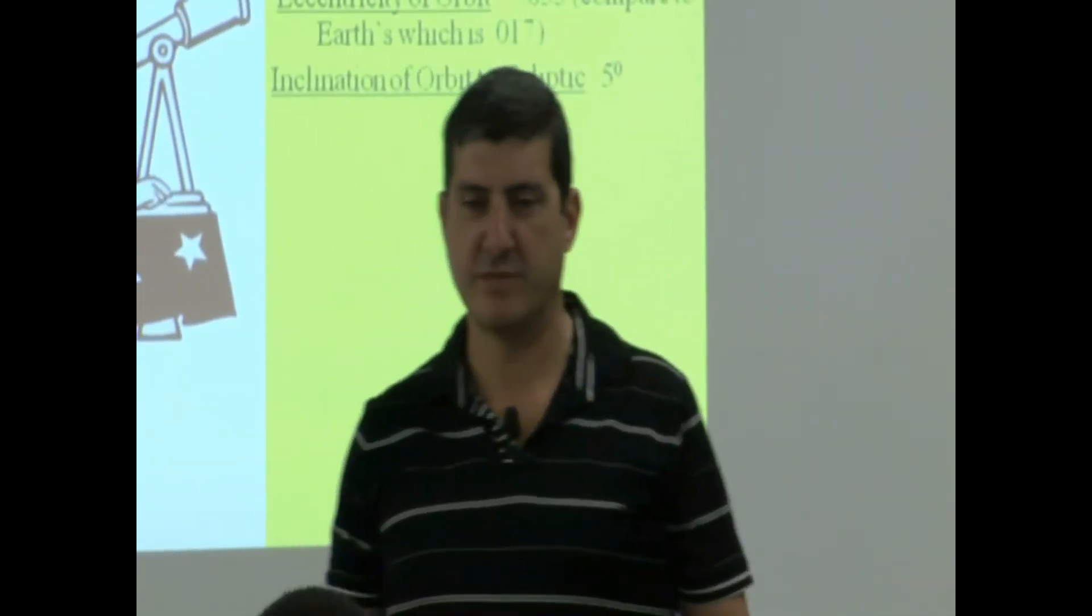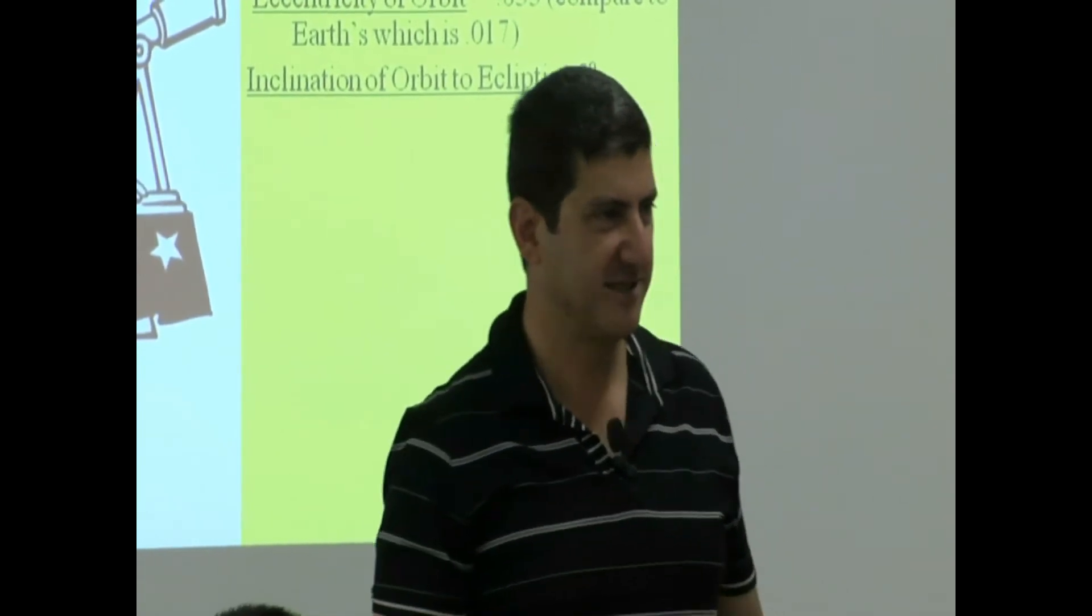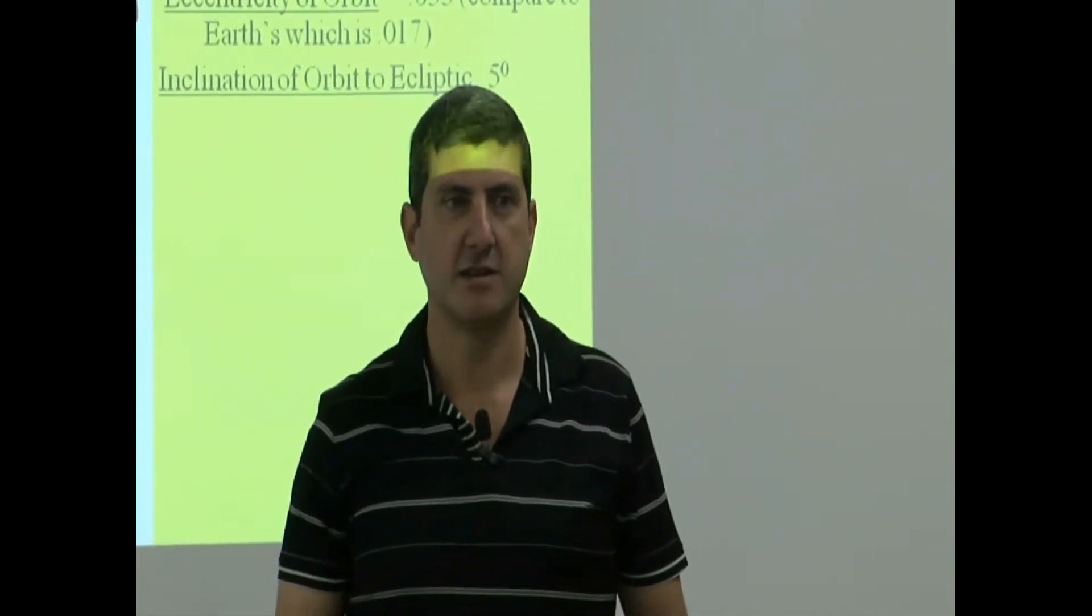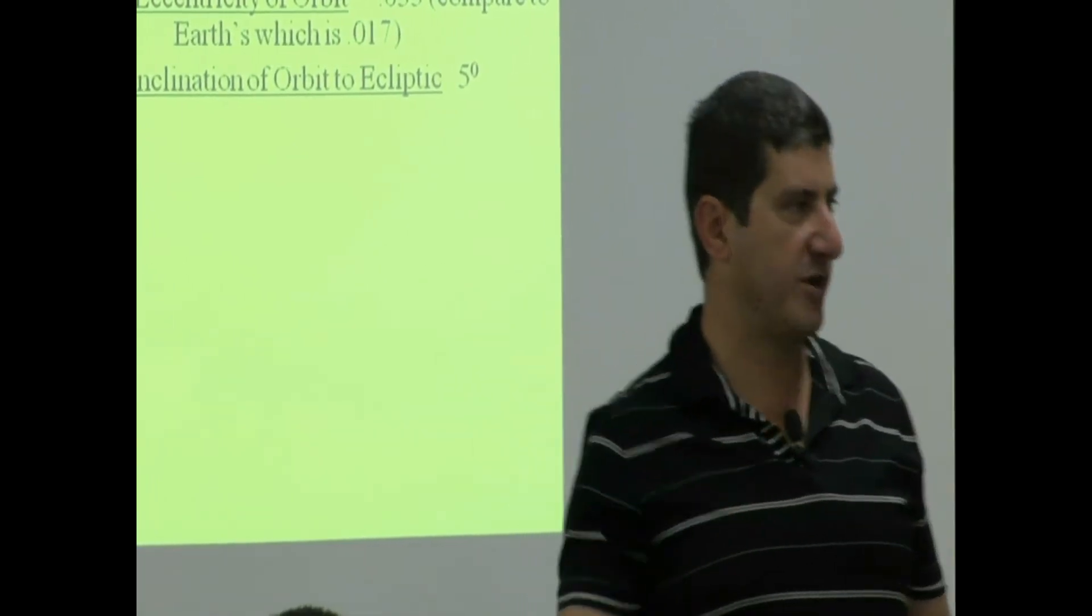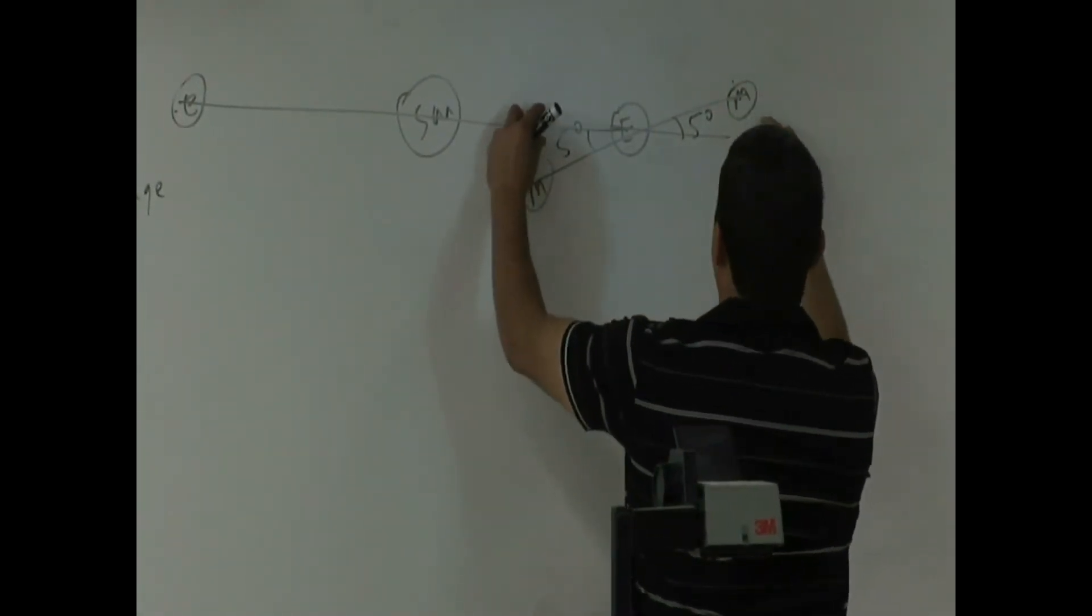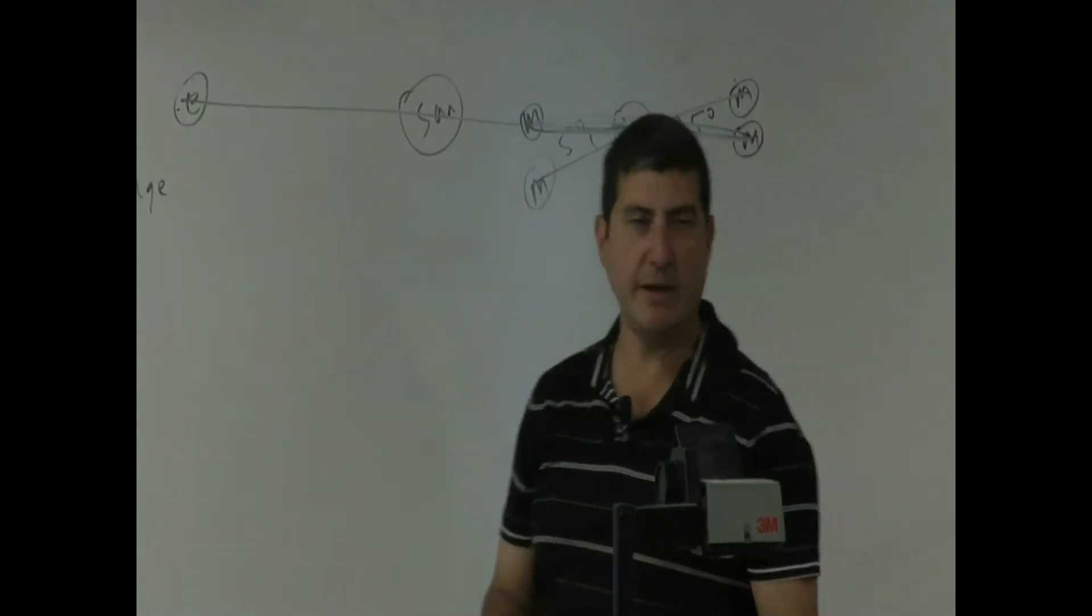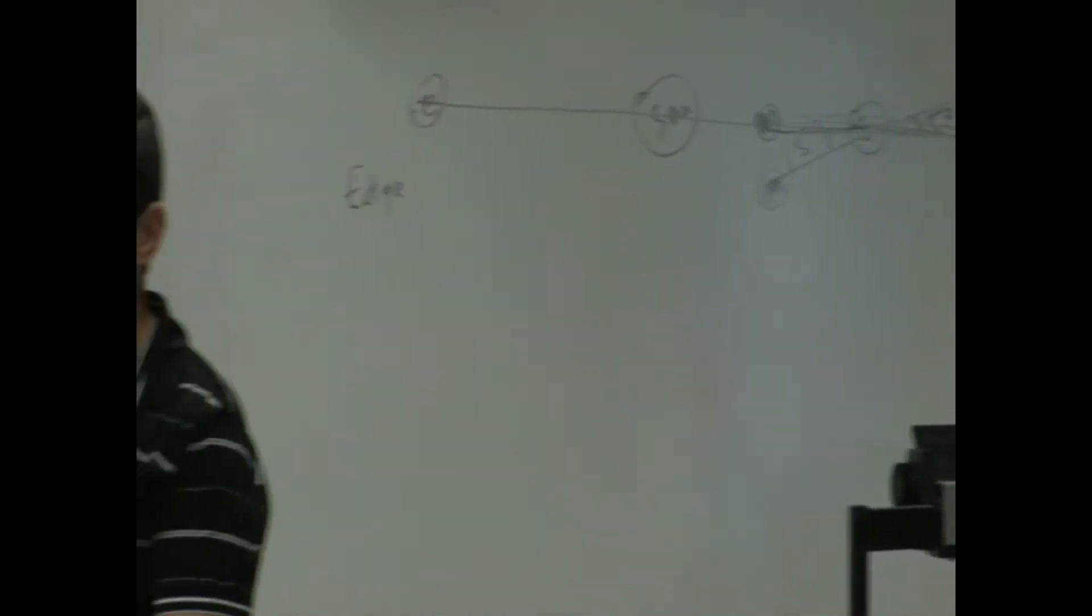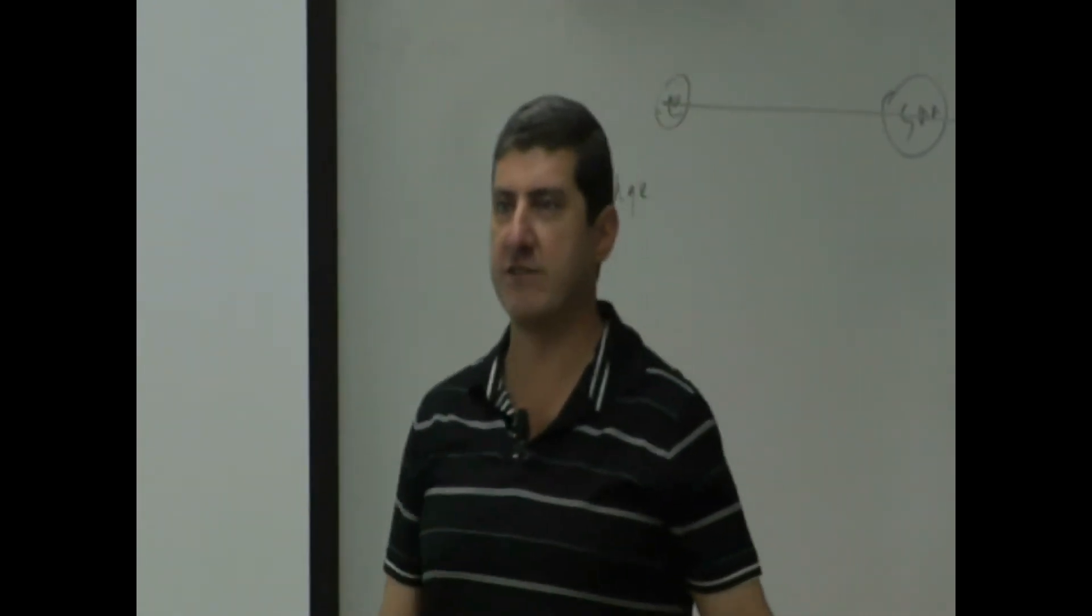So moon's orbit is tilted by five degrees from Earth's orbit. If you remember, I had mentioned that earlier when we were talking about eclipses. What did I mention? I said, why don't solar eclipses happen every month? Why don't lunar eclipses happen every month? And what was the answer? Because of this tilt. If the moon's orbit had been like this, what would have happened? Every month, you would have had a solar eclipse. Every month, you would have had a lunar eclipse. Because it's tilted, you don't have an eclipse every month.